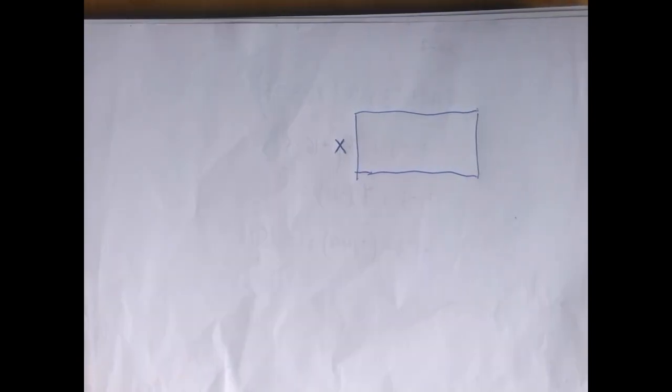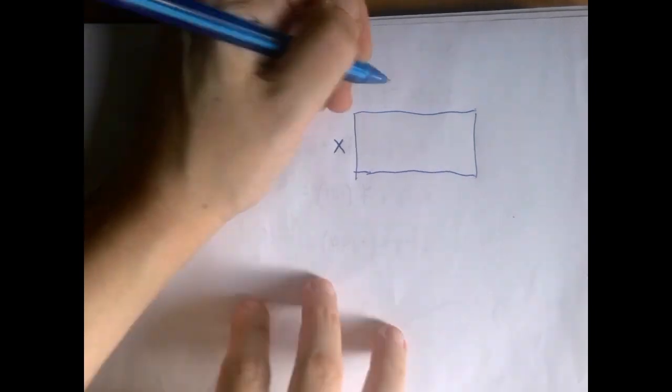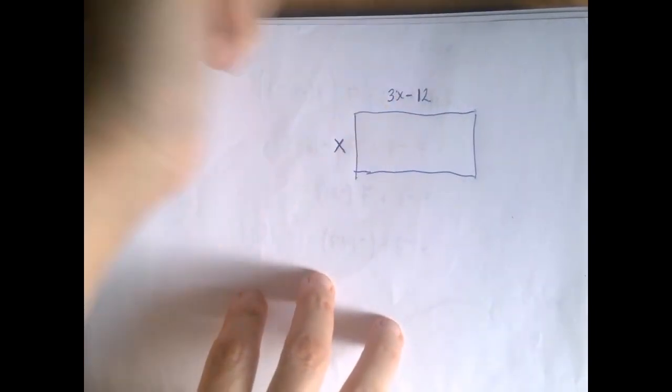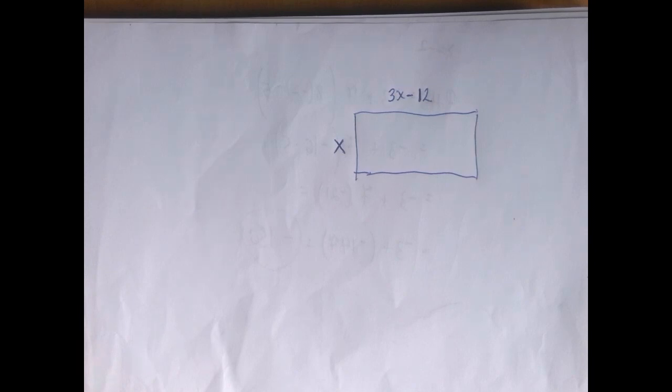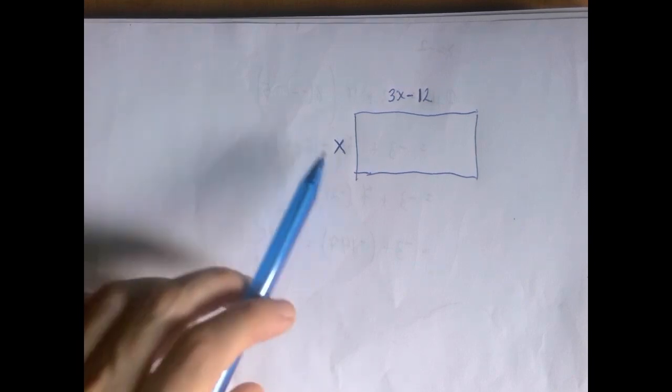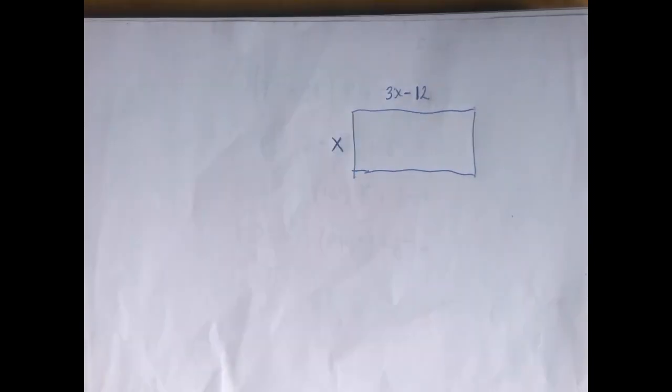We have that the other side is 12 inches less than 3 times this side. So that's 3x minus 12. We have seen that many times, but now it becomes quadratic, because instead of the perimeter the area is given, and that's going to cause a quadratic expression. So this is going to be a quadratic equation.